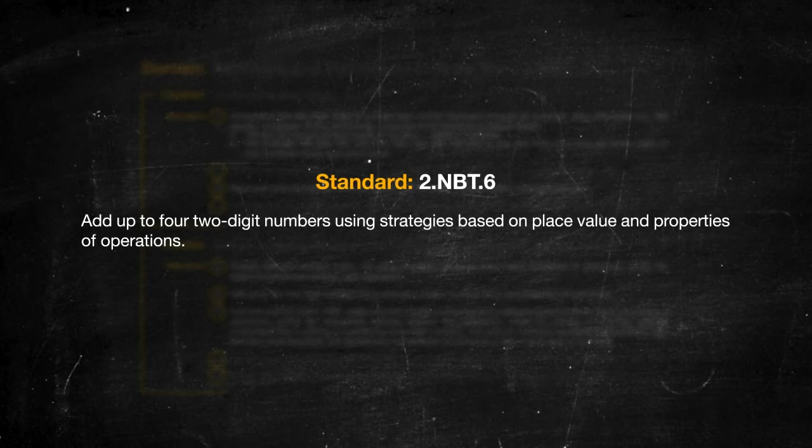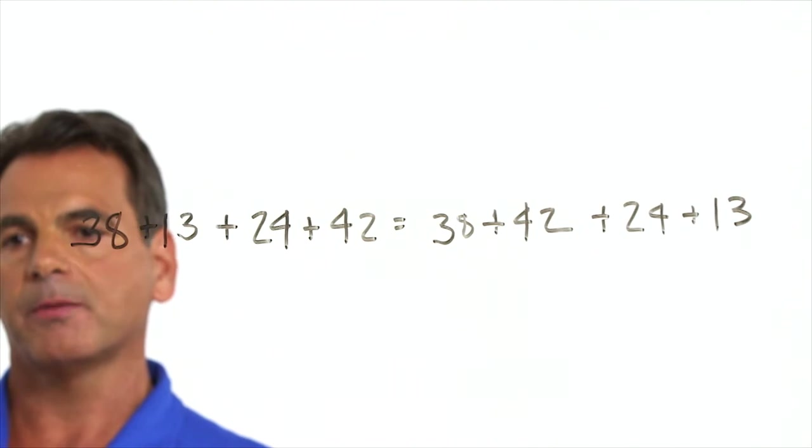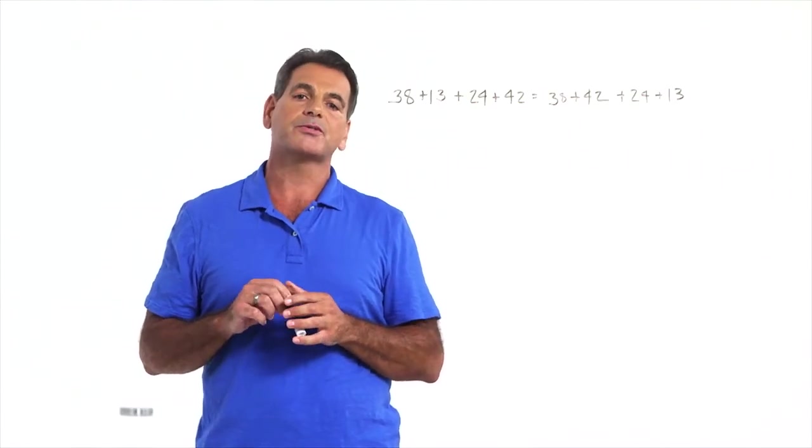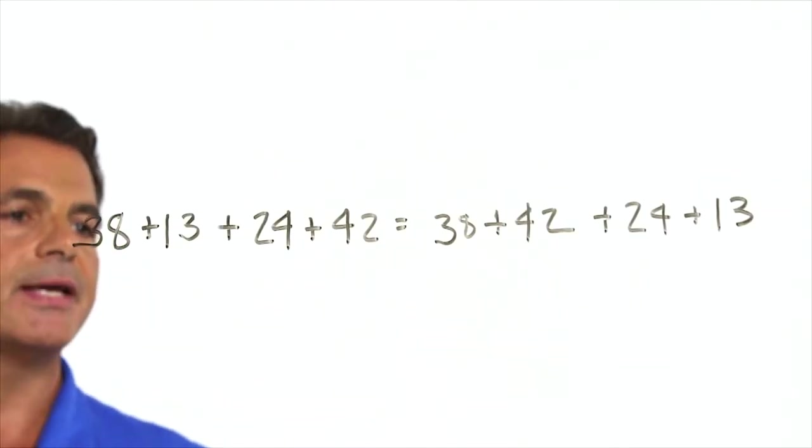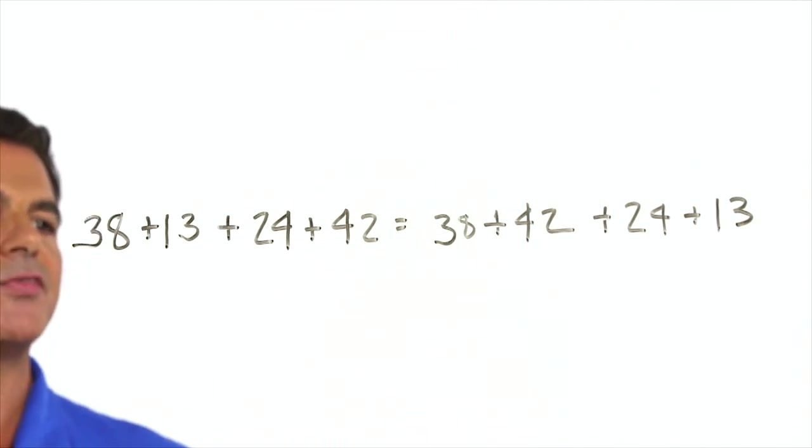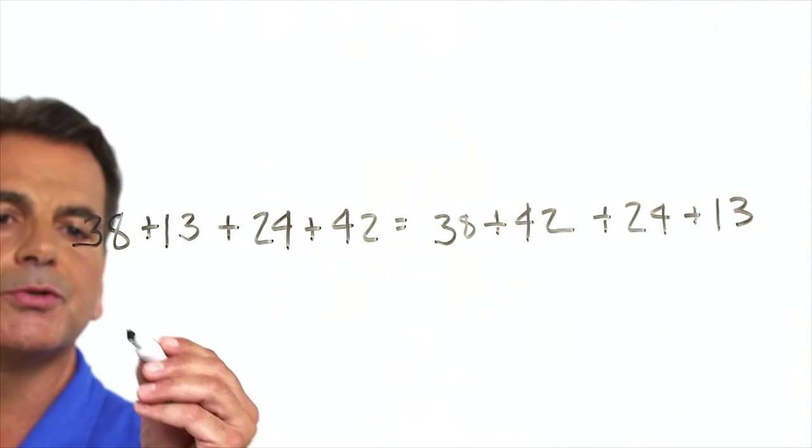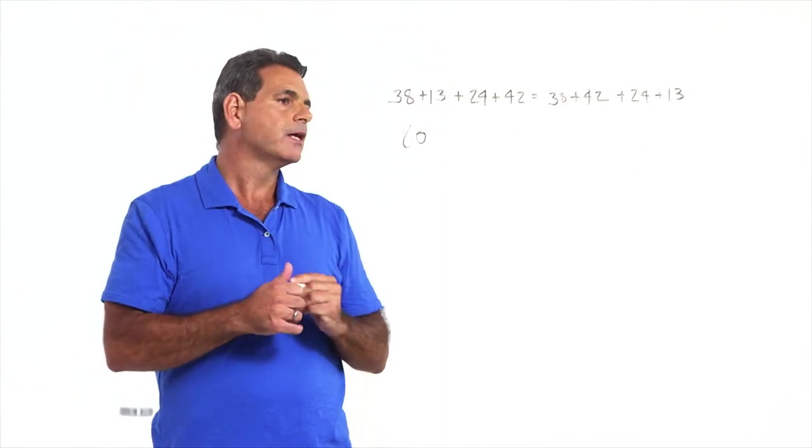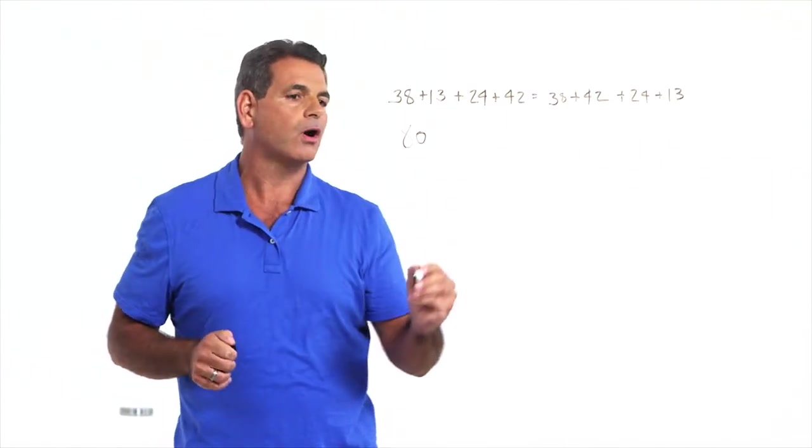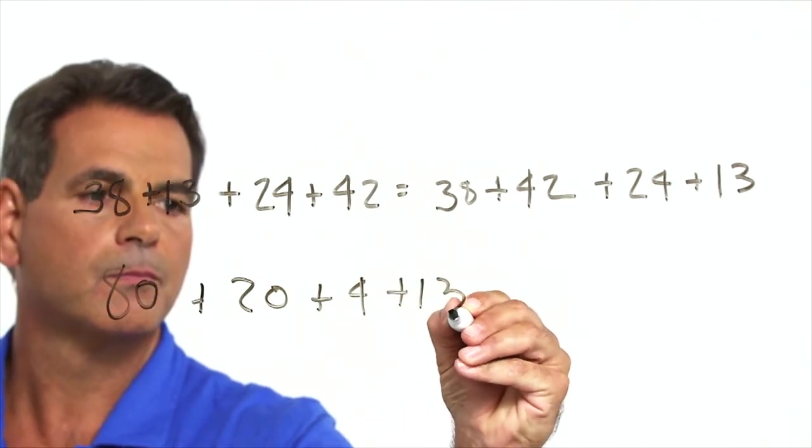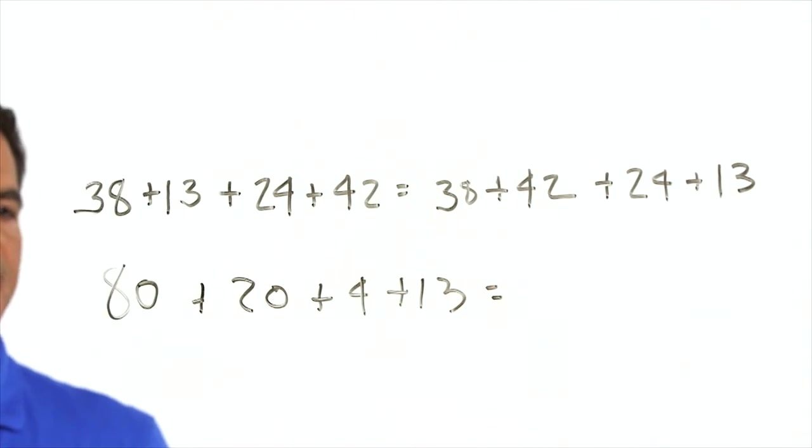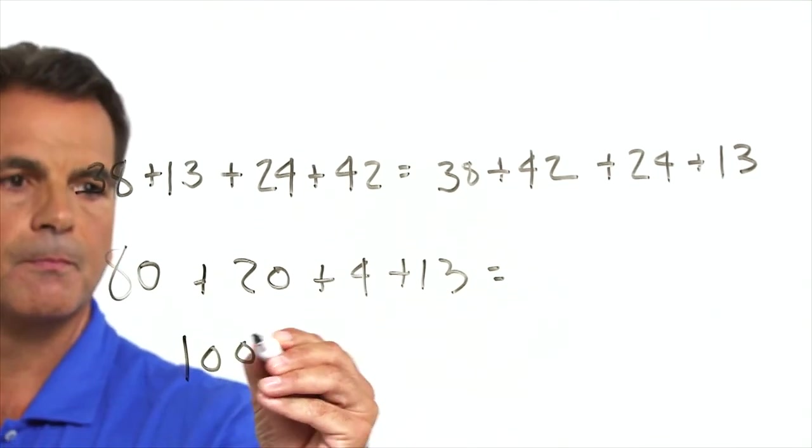Back to standard 2.NBT.6. For this standard, we want the students to add four two-digit numbers using their understanding of place value and properties of operations. Let's look at this problem. 38 and 42 is accessible to students because of the 8 and the 2. They can make a 10. 8 and 2 makes 10, and then they know they have to re-bundle, so it becomes 38 plus 42 equals 80. Now, they can decompose the 24 to 20 plus 4, which allows them to make 100.